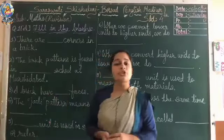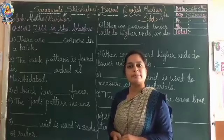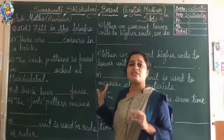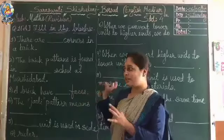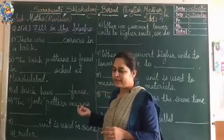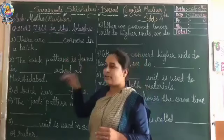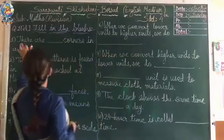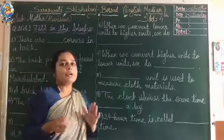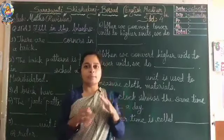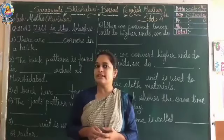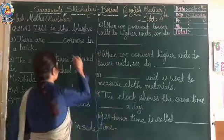The first question of the revision, as per the paper style, is fill in the blanks. As you can see, I have written the blanks question so that I can take a little bit less time for the explanation. So let's have the first question. There are blank corners in a brick. You all know that a brick has a cube shape, so how many corners are there in a brick? It's 8 corners. So the answer is 8.